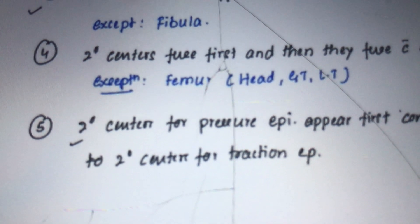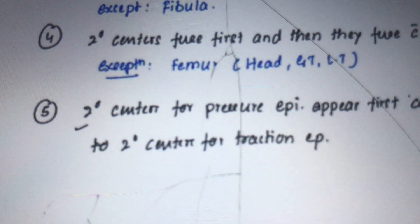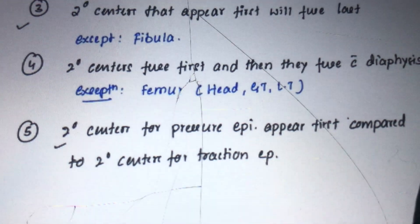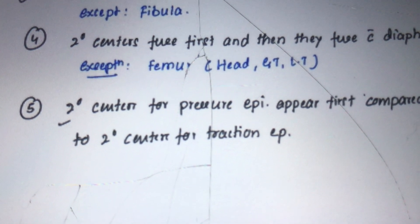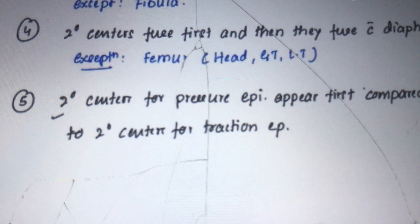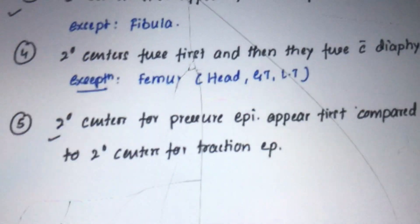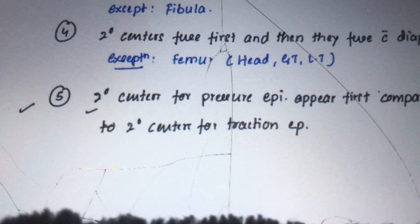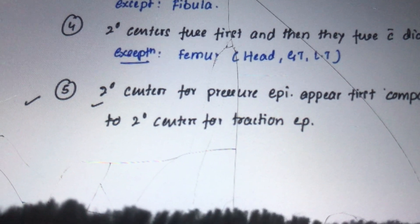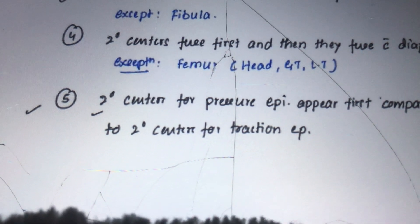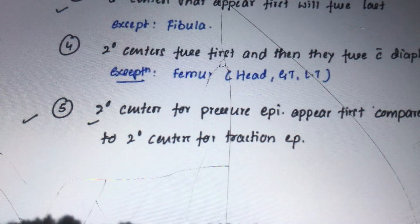The third law says secondary centers that appear first fuse last, but fibula violates this. In fibula, the lower end is the pressure epiphysis and appears first, but it also fuses first. This is because the upper end of the fibula is the growing end and must always fuse last with the shaft.